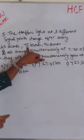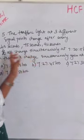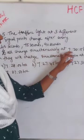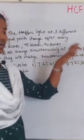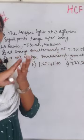45 seconds, 75 seconds, 90 seconds. If all change simultaneously at 7 hours, 20 minutes, 15 seconds, what is the time of the next change?